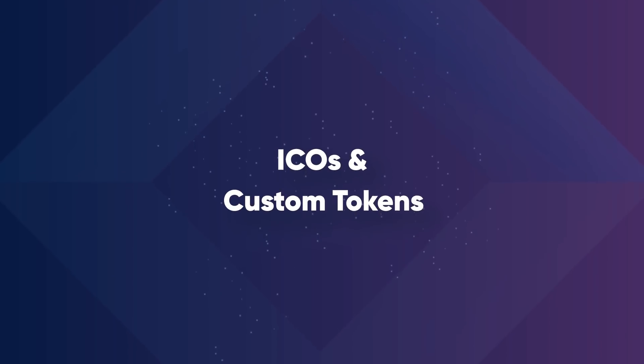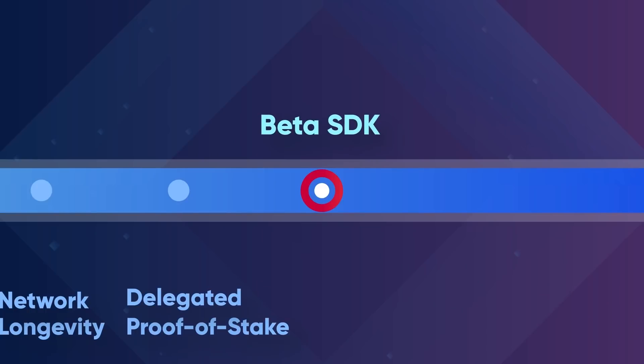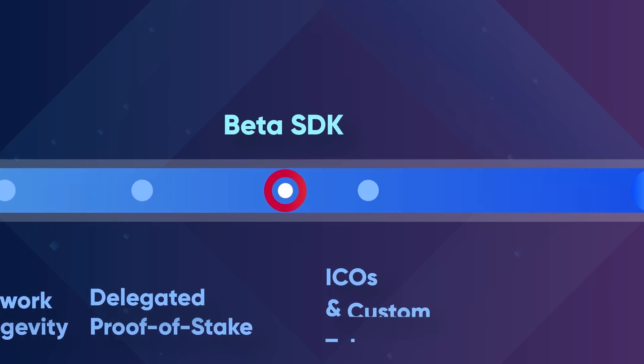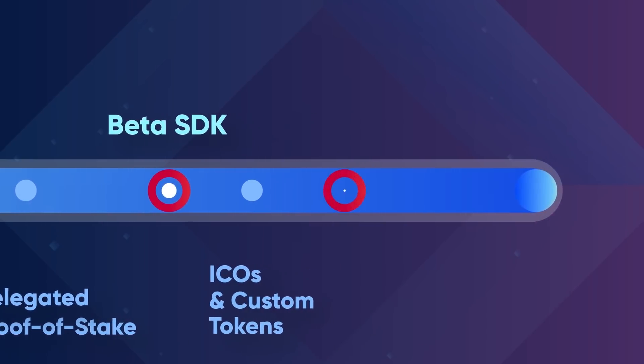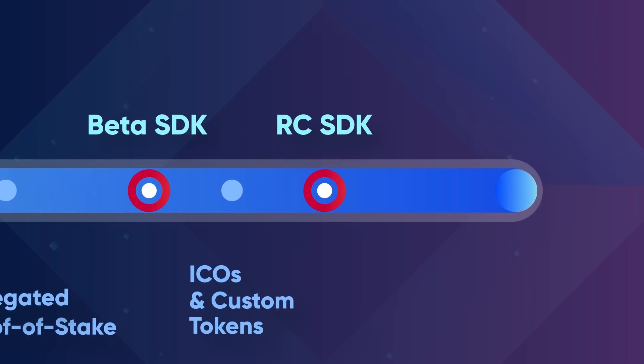ICOs and custom tokens provides the functionality to conduct ICOs and register and transfer custom tokens on the mainchain. With this phase, we will reach the release candidate SDK, where developers will be able to fully bootstrap and develop new applications.